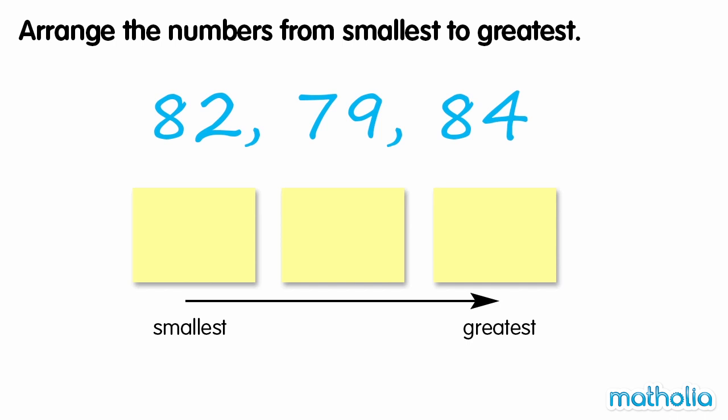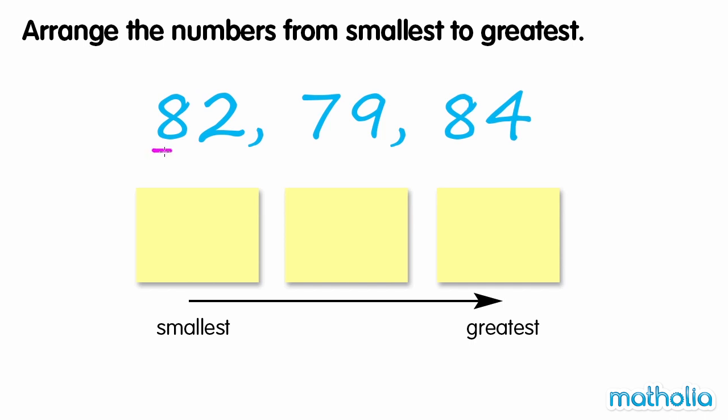Arrange the numbers from smallest to greatest. Let's compare the digits in the tens place. Two of the numbers have eight tens, and one number has seven tens. Seven is smaller than eight. So seventy-nine is the smallest number.